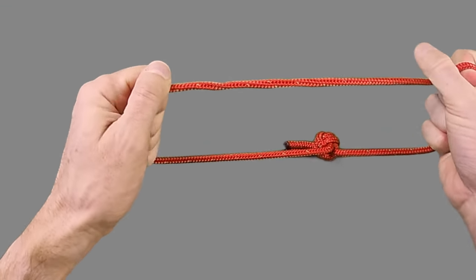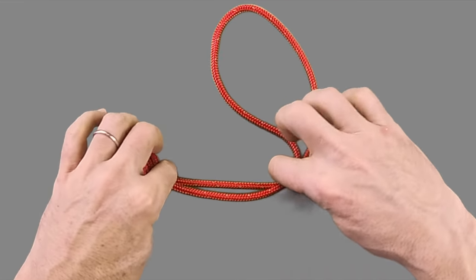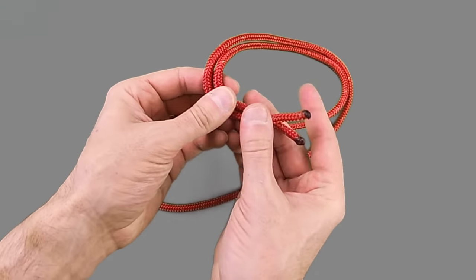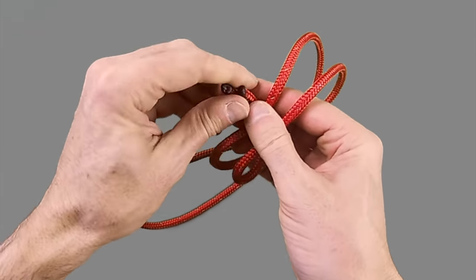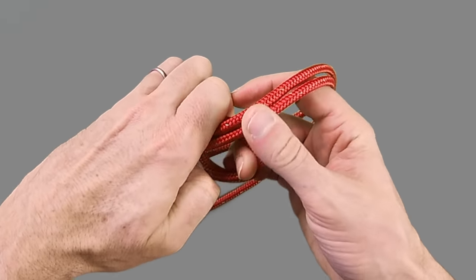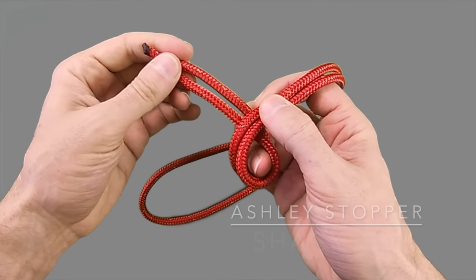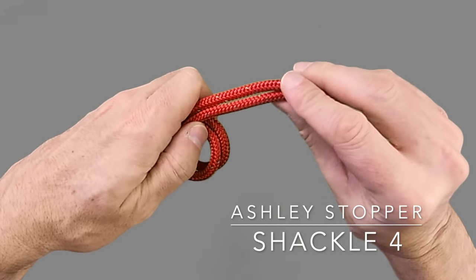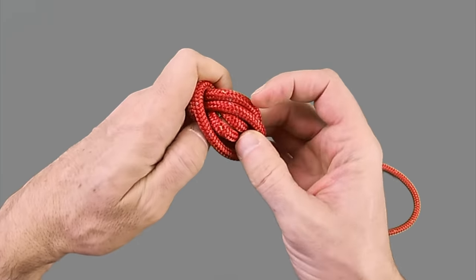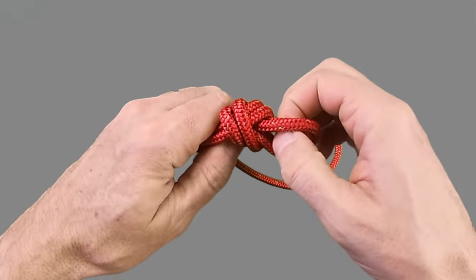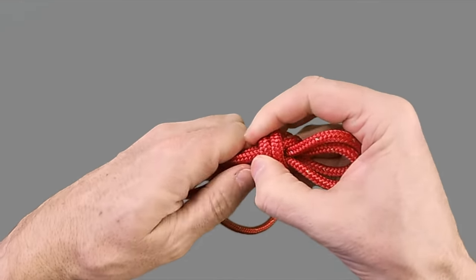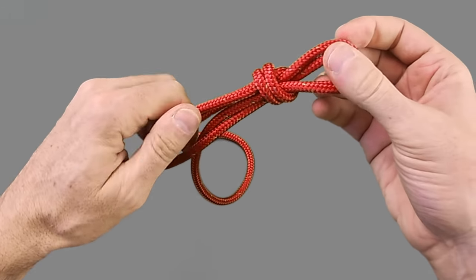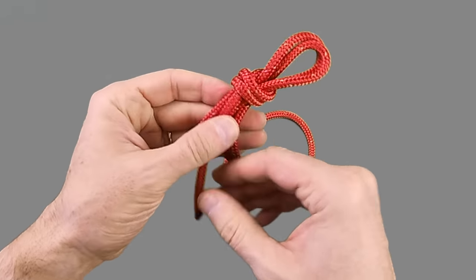The third and final variation of these simple knot-based soft shackles is created utilizing the Ashley stopper knot. This knot creates a fantastically large stopper and it has the added advantage that it creates a really square finishing point for the bite end of the soft shackle to butt up against.